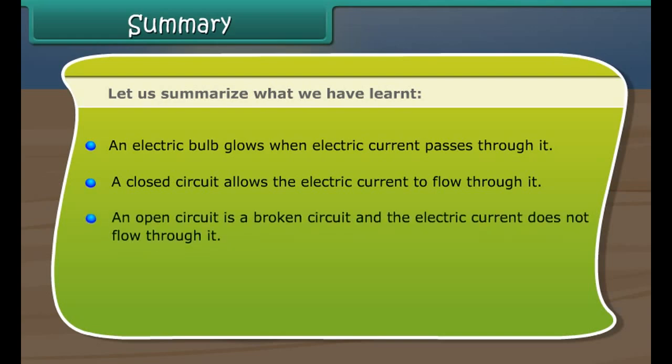Let us summarize what we have learned. An electric bulb glows when electric current passes through it. A closed circuit allows the electric current to flow through it. An open circuit is a broken circuit and the electric current does not flow through it. A switch is a device to close or open a circuit.